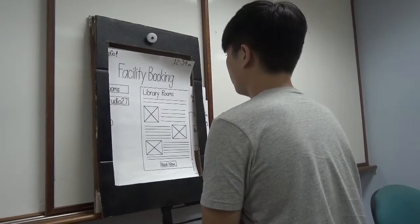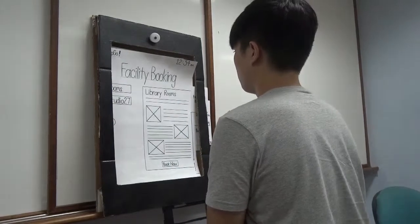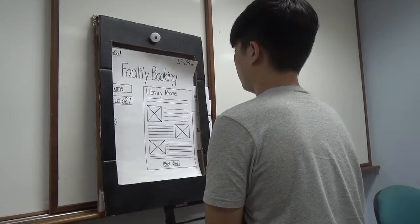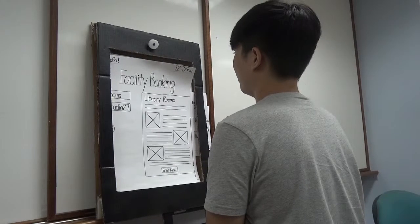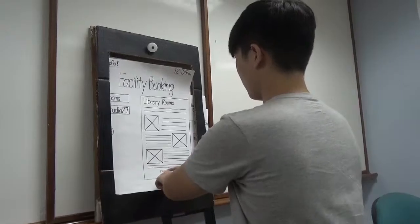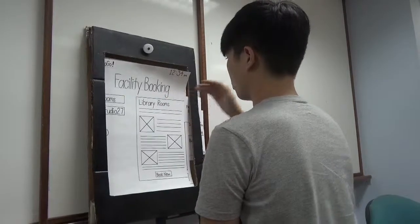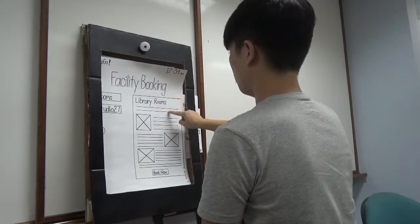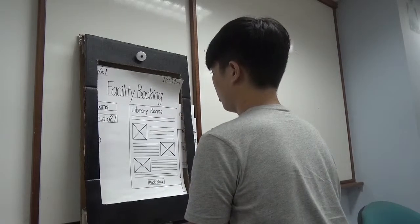Is there anything you would recommend? Maybe for the Book Now button, if you can place it at a higher position. Or maybe at the home page. Maybe the button could be bigger. Yeah, or at a higher position, because when I look at the screen I usually look here first, so maybe over here would be a pretty good position.